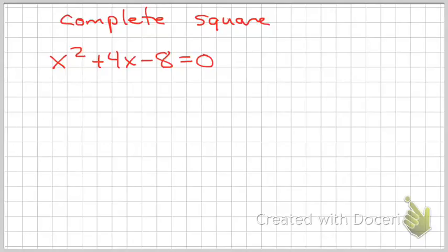It's kind of like putting it into vertex form. Remember when we took these and did vertex form? Okay, but it's going to be different. So what I want to do is I want to get the x squared plus 4x by itself.